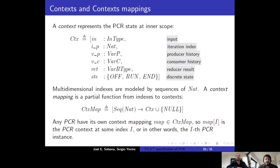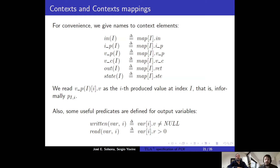A context represents the PCR state at a scope. Its components are: 'in' for the input variable, 'ep' for the current iteration index, 'vp' and 'vc' for the producer and consumer values, 'ret' for the reducer result, and a state component with one of three possible PCR states. Multidimensional indexes are modeled by sequences of naturals. A context mapping is a partial function from index to context. Map of capital A is the PCR context at index A. We also define useful predicates: 'written' holds true if a variable has been written at some index, and 'read' holds true if a variable has been read at some index.